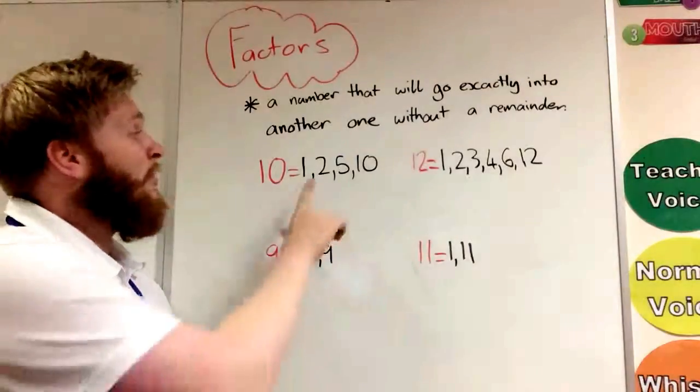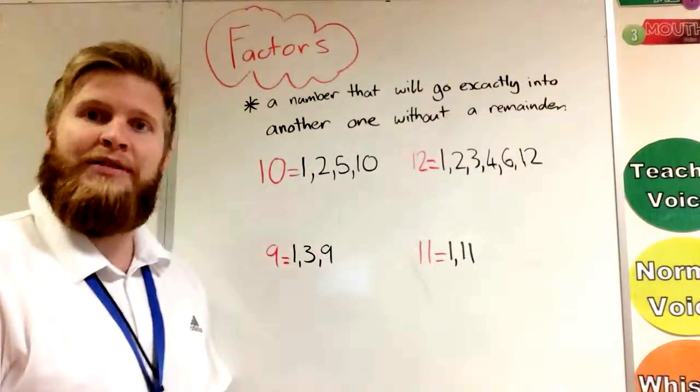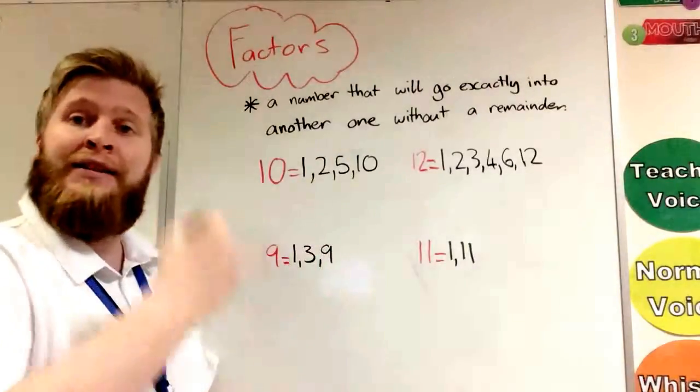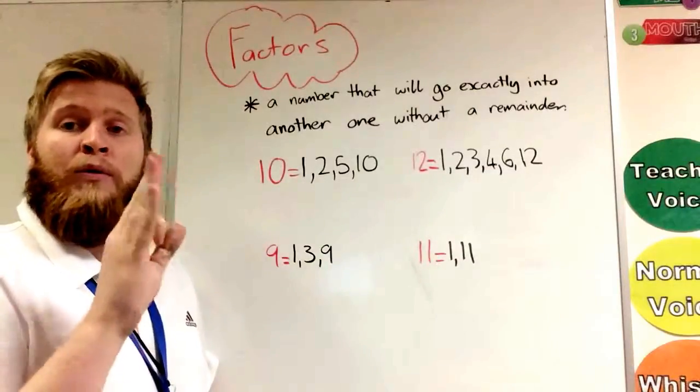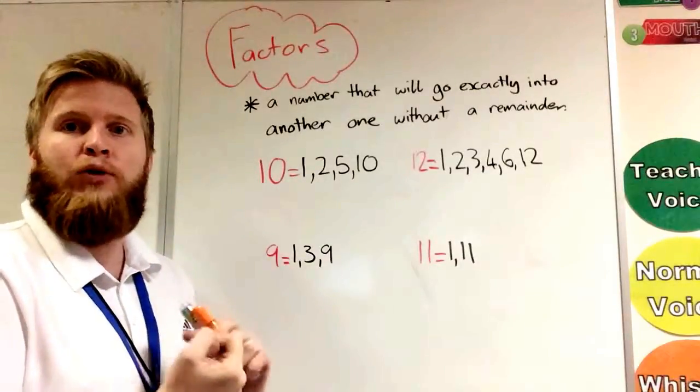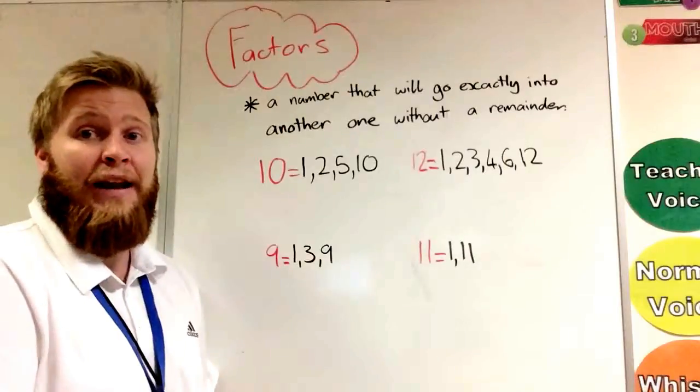And 10, obviously 1 times 10 is 10. But if we look at a number like 3, if we count on in the 3 times table—3, 6, 9—we would get to 9 and then we'd have 1 left over, so we wouldn't go exactly in.